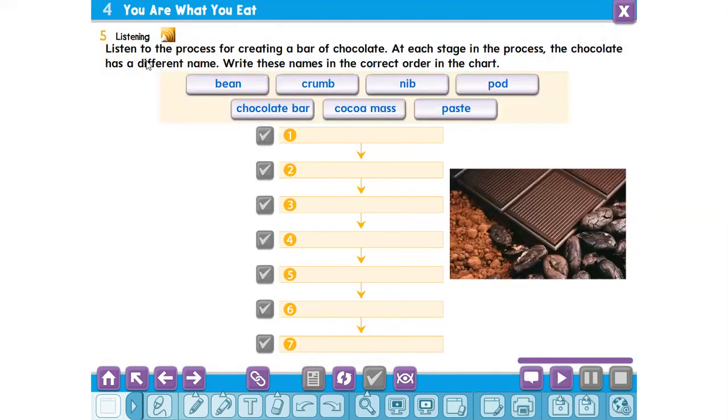Now, we will listen to the process for creating a bar of chocolate. At each stage in the process, the chocolate has a different name. Write these names in the correct order in the chart. Listen carefully.